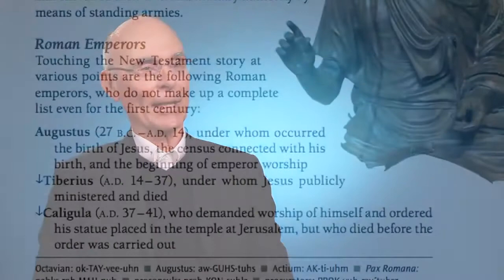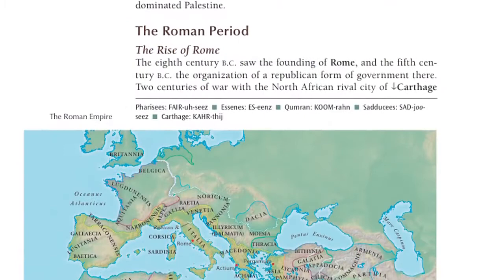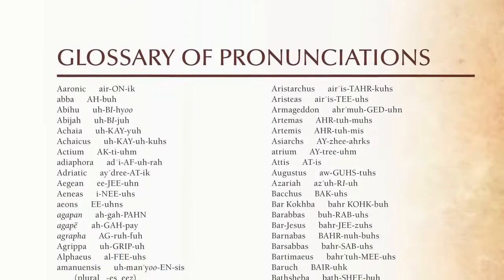The Survey of the New Testament has recently introduced pronunciation guides. Every first time that a difficult term or name occurs in the text, there is a pronunciation guide at the bottom of the page, and then a glossary of pronunciation guides at the end of the book. I have discovered in my teaching that students often don't understand what they can't pronounce, and there are a lot of strange names and titles in the New Testament that confuse them simply because they don't know how to pronounce them.